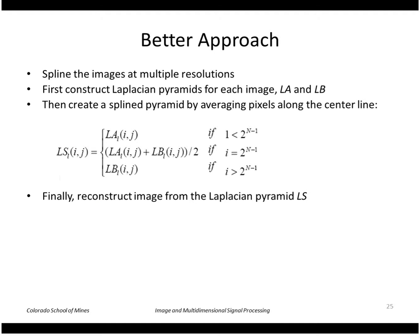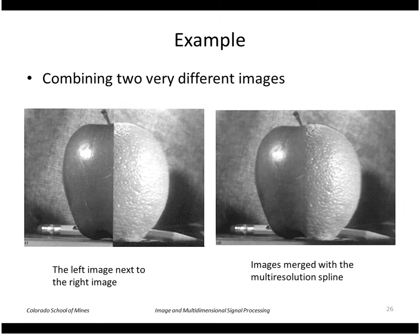The advantage is that at very high levels of the pyramid, a single center-line column represents a fairly wide area of the image, so we're blending the two images at a very coarse level. At the very fine levels, the center line represents only a very narrow part of the image, so we're blending only the high-frequency portions in that narrow region. Here is a result — two images, left and right, and the splined image produced by Laplacian splining.